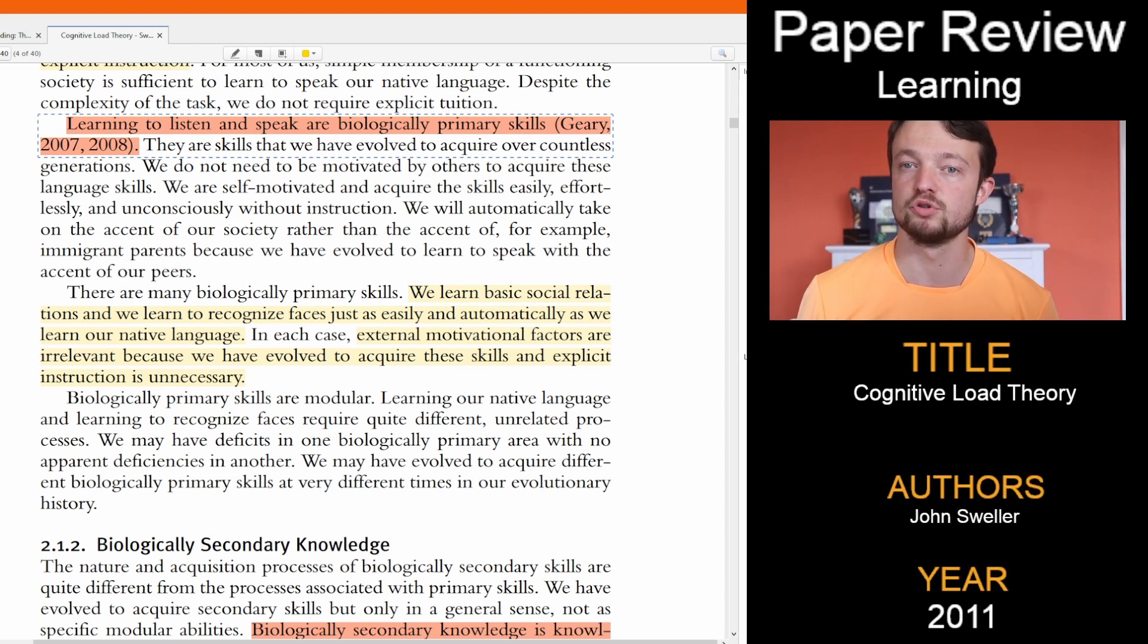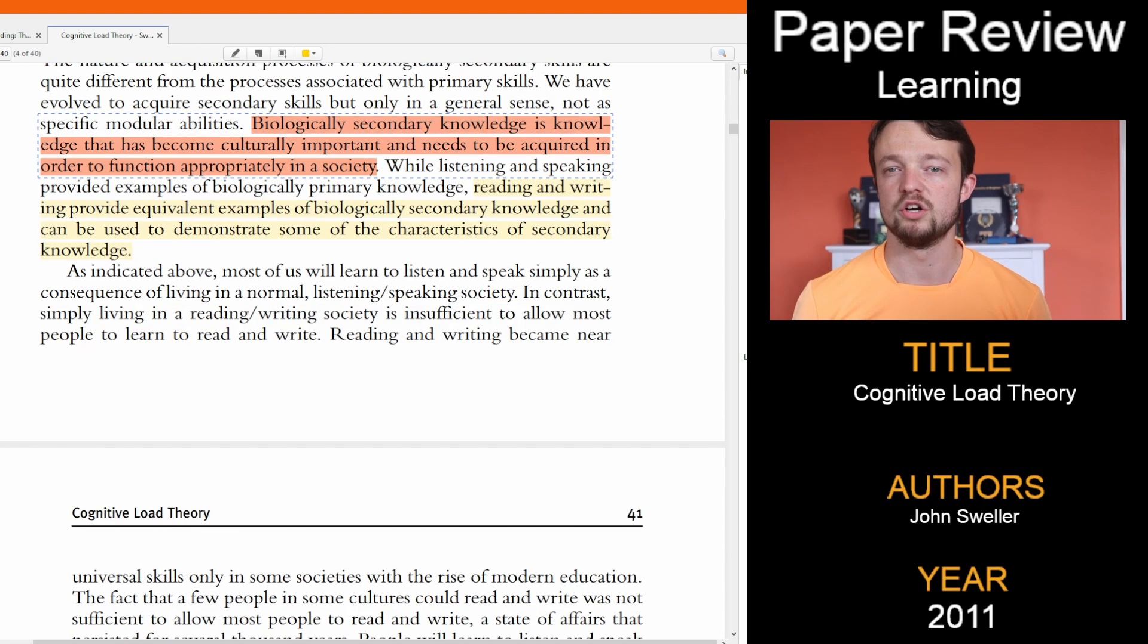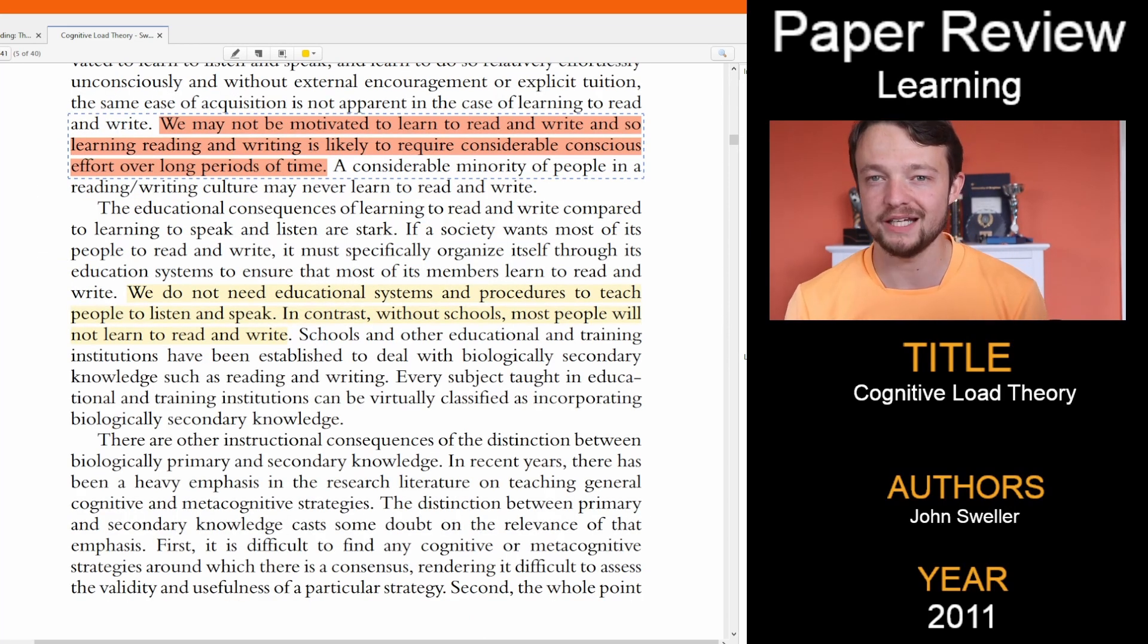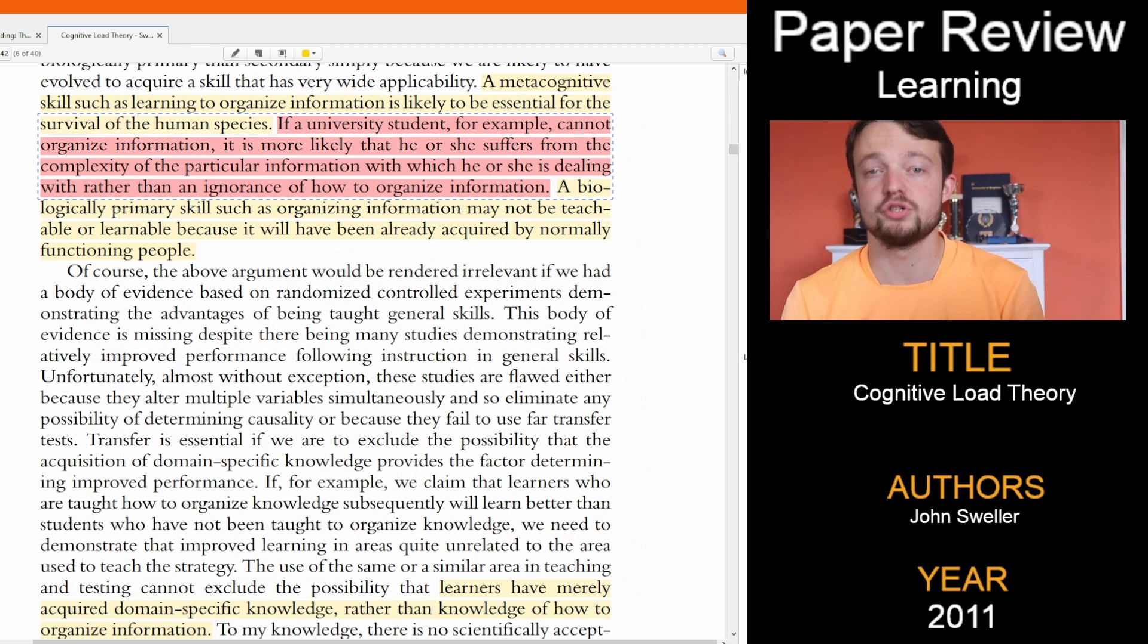Learning to listen and speak are examples of biological primary skills, whereas biological secondary knowledge is more culturally important, like reading and writing. We might not be naturally motivated to learn to read and write without our culture and society, which requires considerable conscious effort over a long period of time. This idea also suggests that organizing information is natural. We organize the words we hear by ourselves to learn to speak.